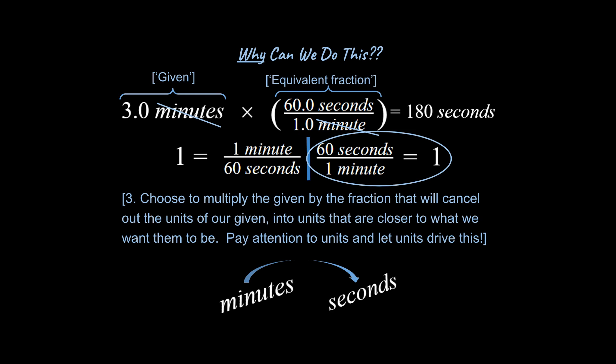But again, to answer the question why can we do this? The answer is because we can take any given value, multiply it by an equivalent fraction that is equal to 1, and we end up changing not the amount of stuff that we have, but how that is simply counted.